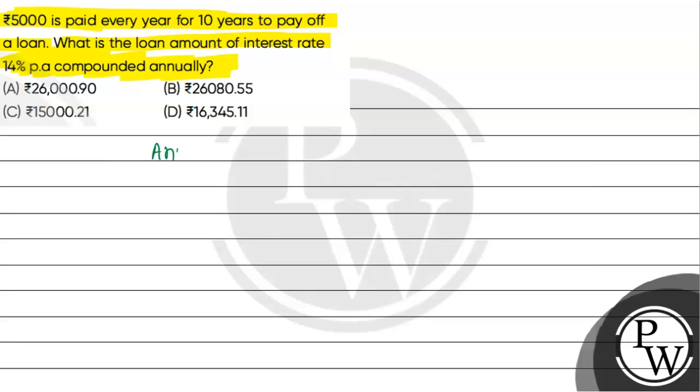In this question, the annuity amount that we are paying is equal to rupees 5,000. Annuity amount is 5,000.